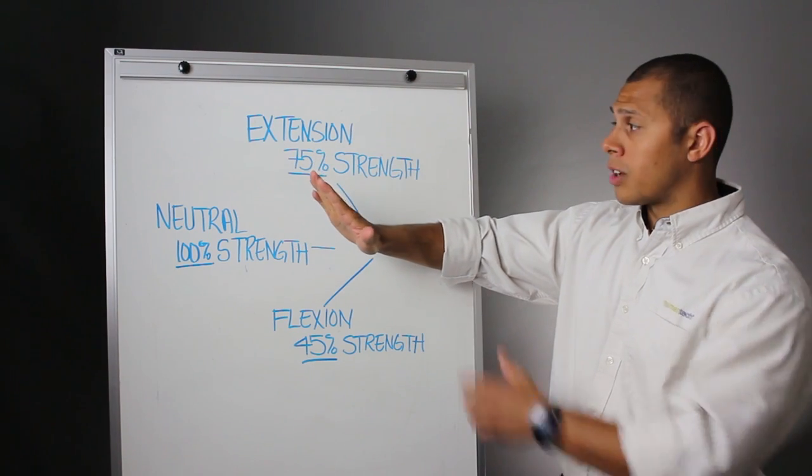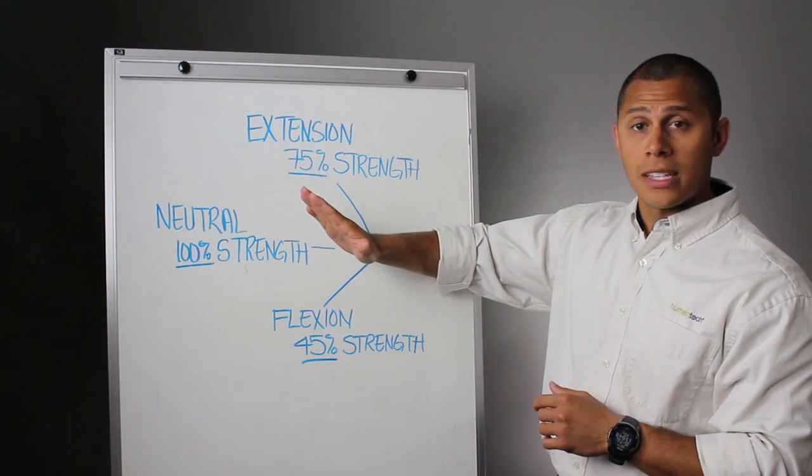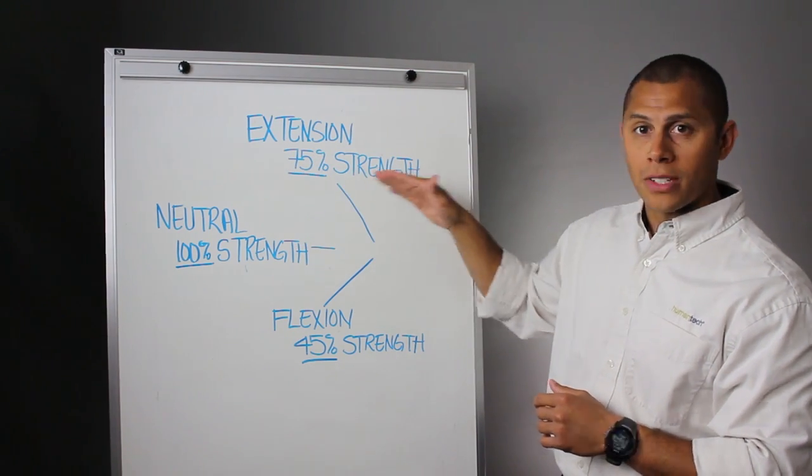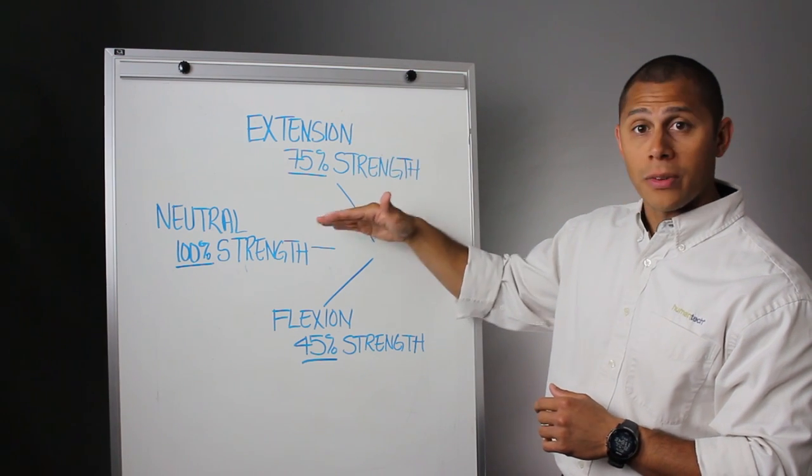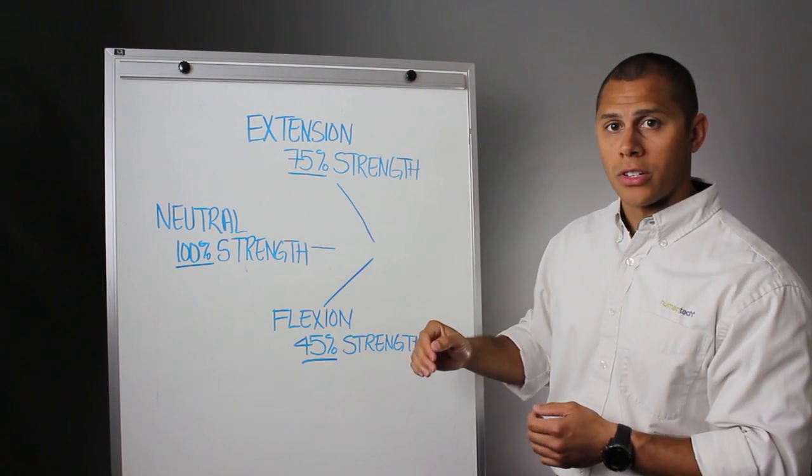Whenever our hands go up to extension, when our fingertips are pointed towards the ceiling, we can create 75% of strength. So that's a 25% decrease from what we could already have in neutral postures.